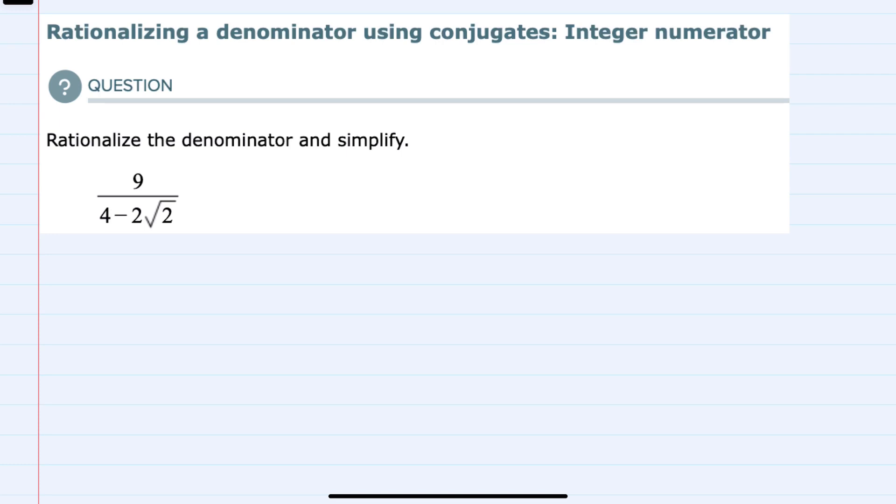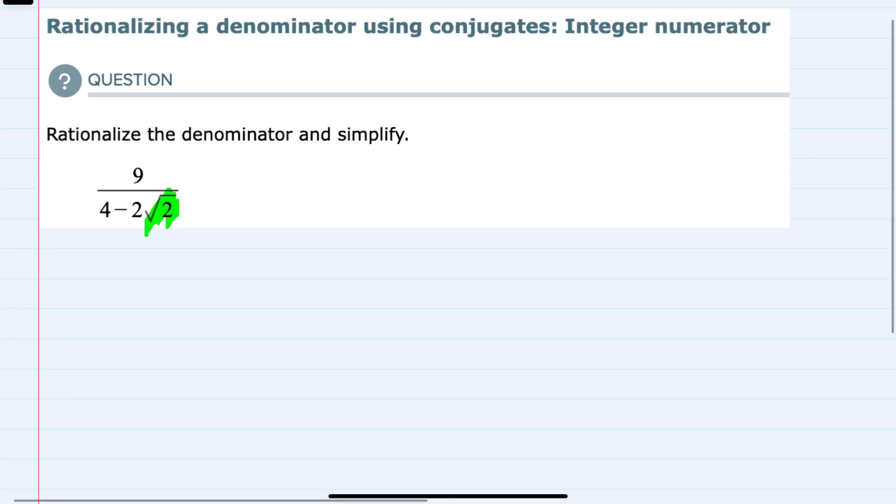To rationalize the denominator, we want to get rid of the square root. And to do so, we're going to use what we know about the difference of two squares.